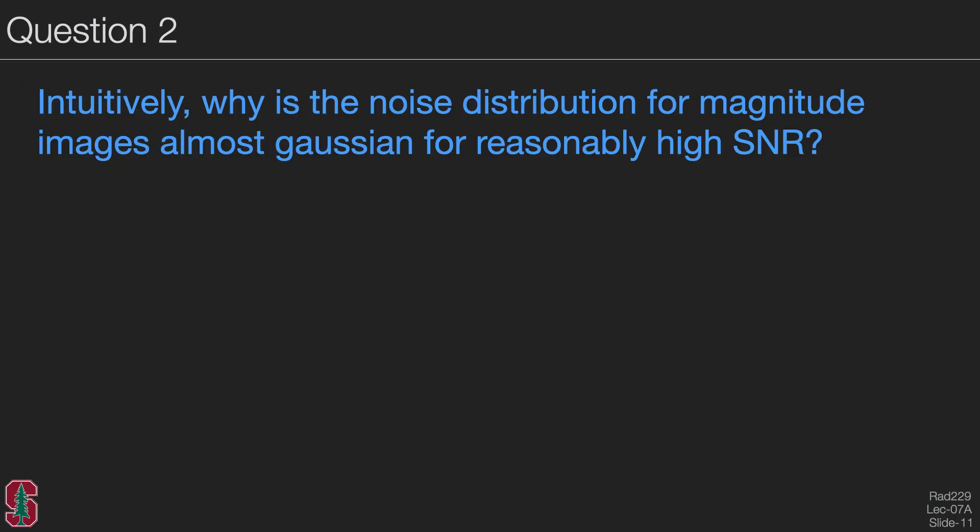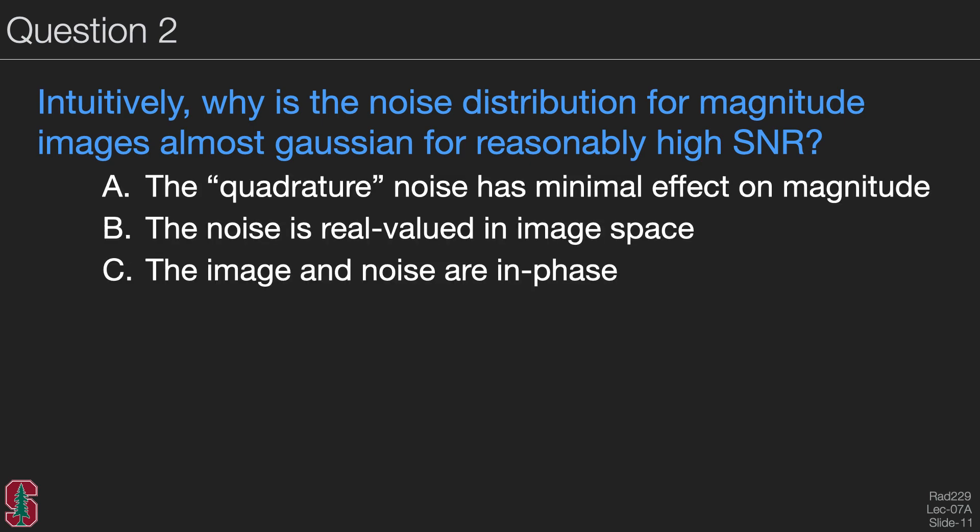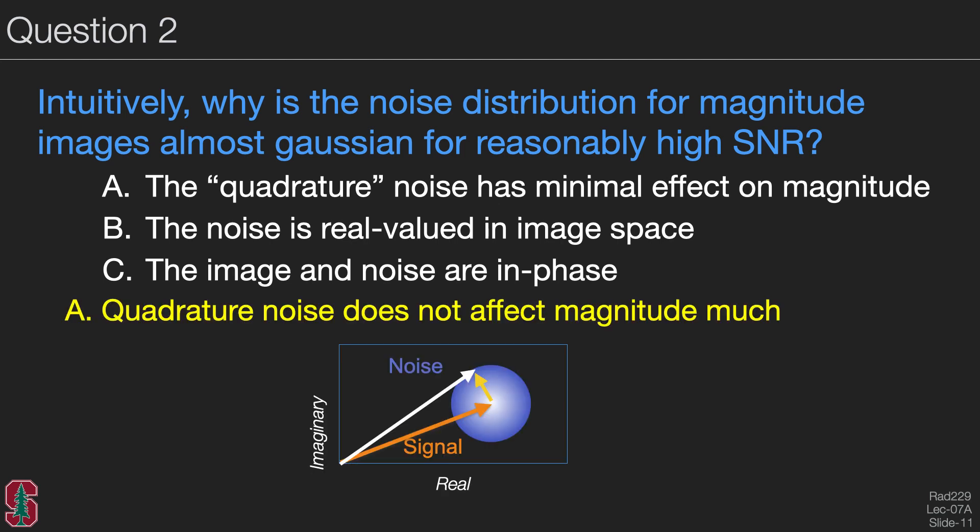This brings us to another question. Intuitively, why is the noise distribution for magnitude images almost Gaussian for reasonably high SNR? The best answer is that the quadrature noise has minimal effect on the magnitude. When we take the magnitude, it doesn't change very much when you have quadrature noise. This means that the dominant noise is the in phase noise that is itself Gaussian.